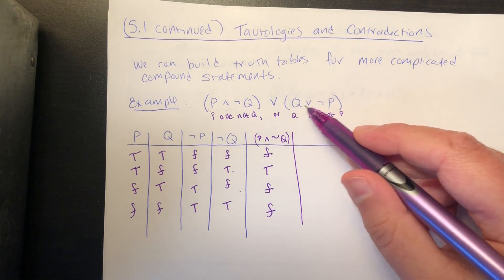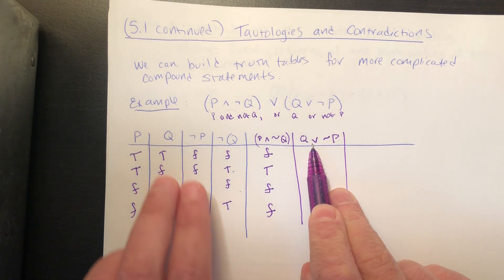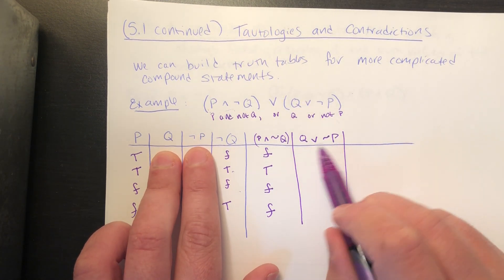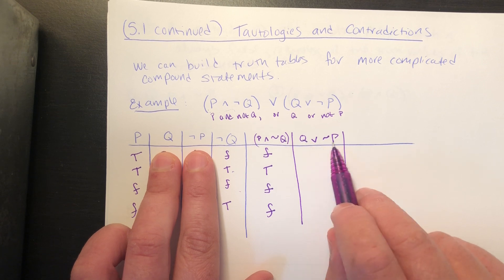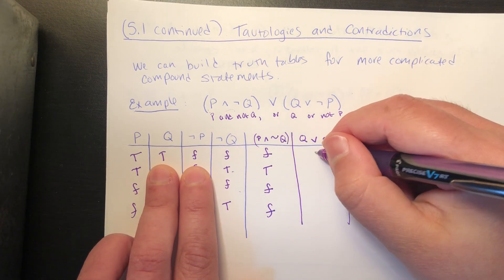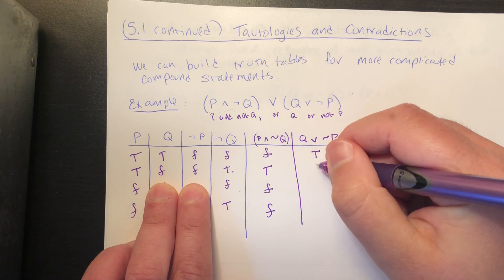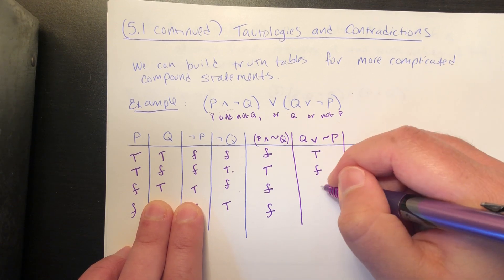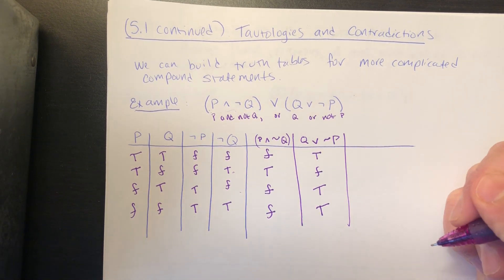Then I need a column for q or not p. This is an or statement — I look at the q column and the not p column. An or statement is true as long as at least one part is true; it's only false when both parts are false. In the first row there's a true and a false, so at least one is true — or is true. In the second row both are false, so the or is false. In the third both are true, so it's true. In the last case not p is true, so the or is true.